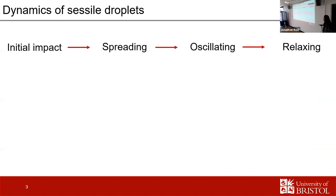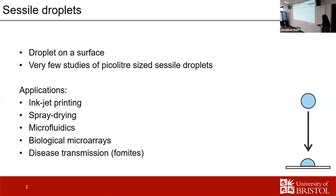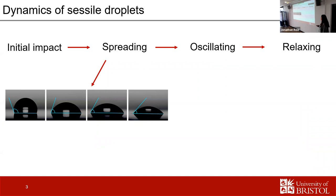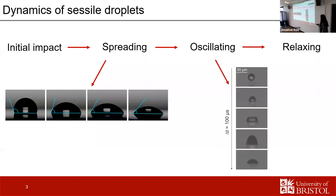A brief overview of the dynamics of sessile droplets: we have the initial impact of the droplet on the surface, then it will spread and oscillate, and then it eventually relaxes. The exact spreading is going to be determined by the interaction between the droplet and the specific surface. We also have a schematic of the droplet oscillation — it becomes deformed and then, due to its surface tension and interaction with the surface, it oscillates and then relaxes.